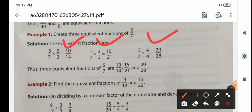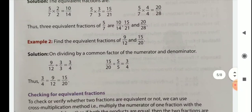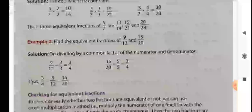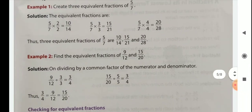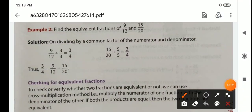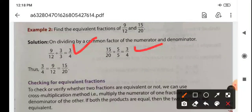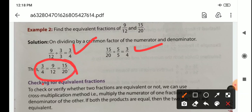Example 2: find the equivalent fractions of 9 by 12 and 15 by 20. On dividing by a common factor of the numerator and denominator, we get equivalent fractions. We divide and get 3 by 4 from both. So these fractions are the same, and 3 by 4, 9 by 12, and 15 by 20 are all equivalent fractions.